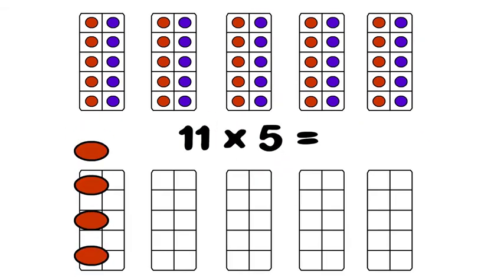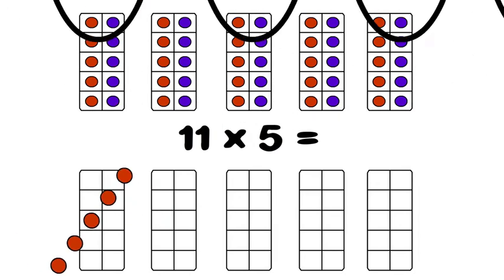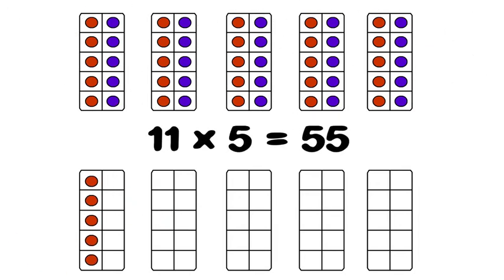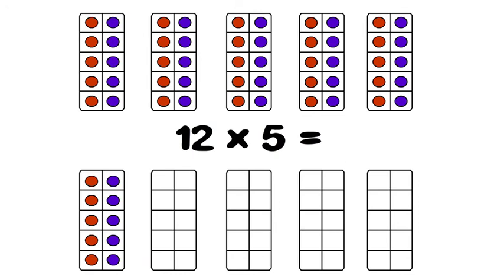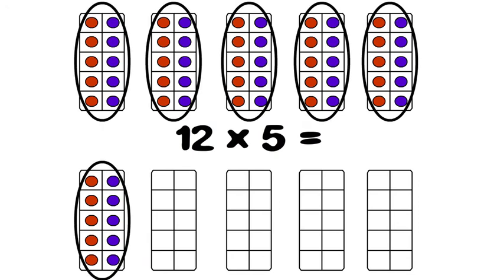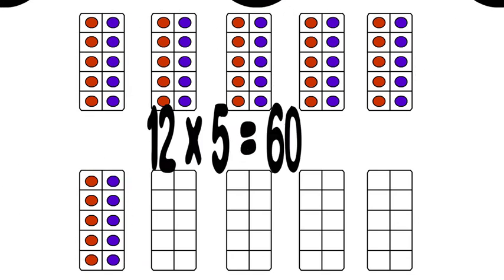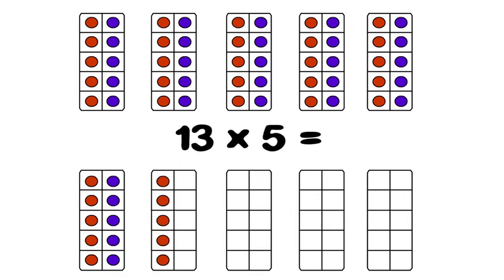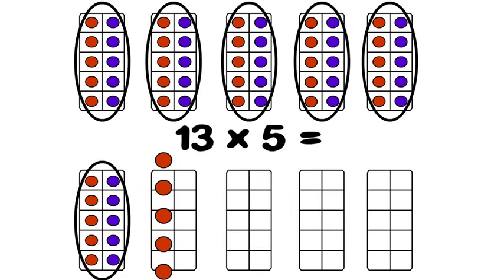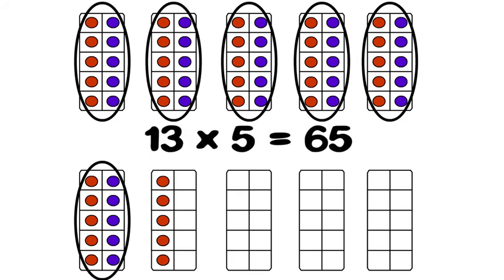Eleven times five, that's fifty plus five, or fifty-five. And going, twelve times five, that's like six times ten, which is sixty. Thirteen times five, that's sixty and five more, so thirteen times five is sixty-five.